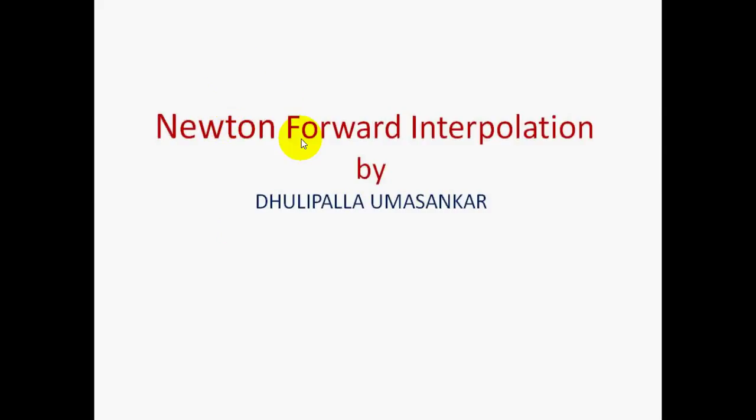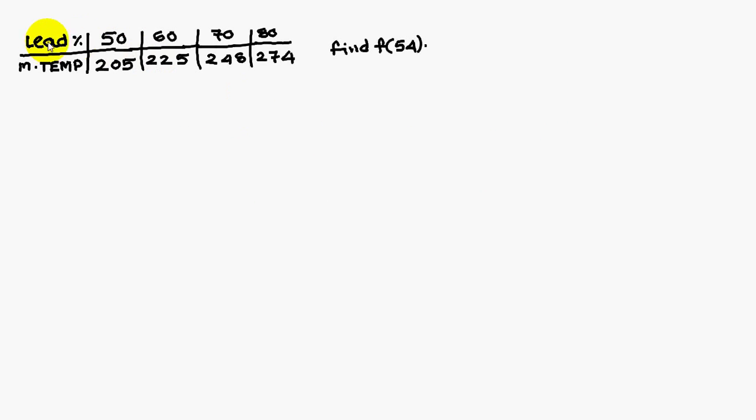Today we are going to discuss Newton forward interpolation problem. He has given lead percentage versus the melting temperature. If the lead percentage is 50%, melting temperature is 205. Similarly for 60 it is 225, for 70 it is 248, for 80 it is 274. Then for 54 lead percentage, what is the melting temperature he is asking.